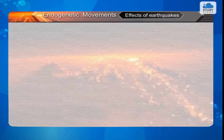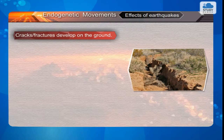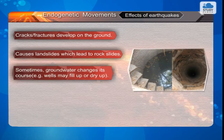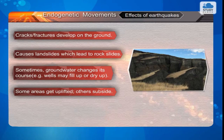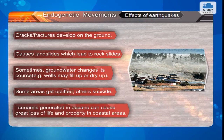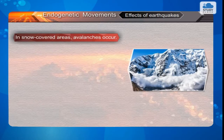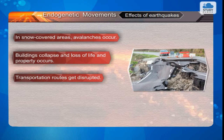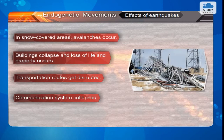Effects of Earthquakes: Cracks and fractures develop on the ground. Earthquakes cause landslides which lead to rock slides. Sometimes groundwater changes its course — for example, wells may fill up or dry up. Some areas get uplifted while others subside. Tsunamis generated in oceans can cause great loss of life and property in coastal areas. In snow-covered areas, avalanches occur. Buildings collapse and loss of life and property occurs. Transportation routes get disrupted and communication systems collapse.